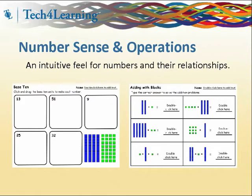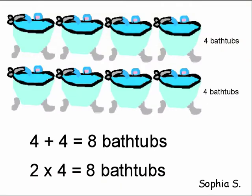In developing their knowledge with number sense and operations, students extend the counting sequence, understand place value, and use place value understanding and properties of operations to add and subtract. Having students use Pixie or Wixie's paint tools to illustrate equations can help them learn to solve problems using the relationships among operations.